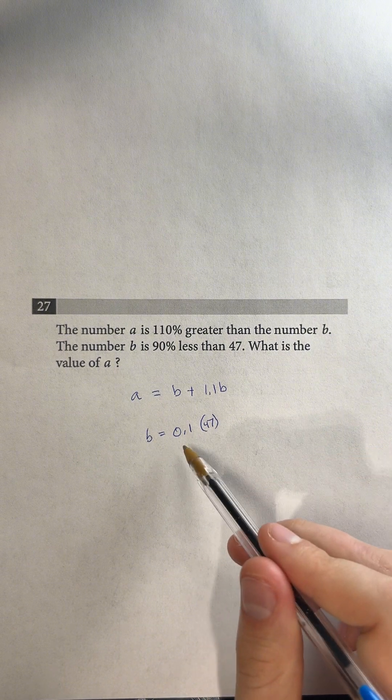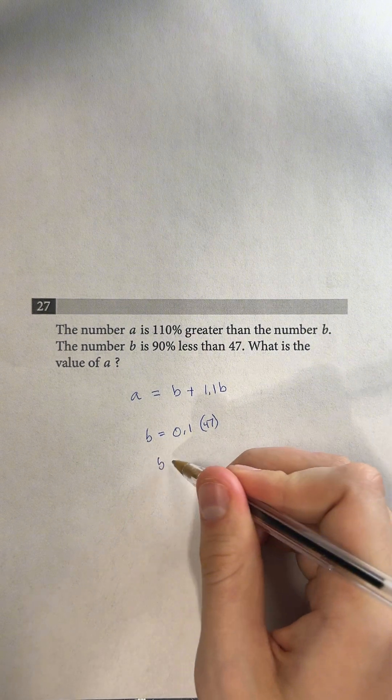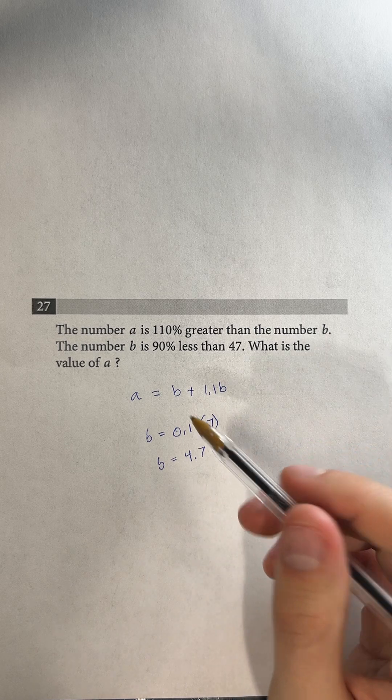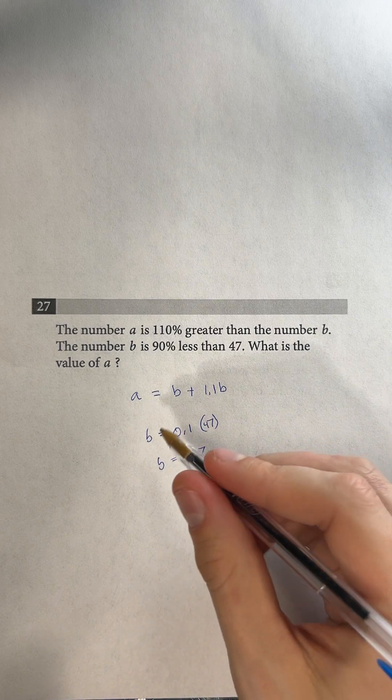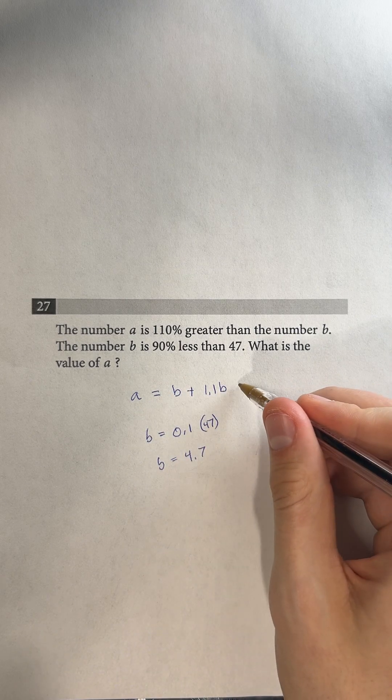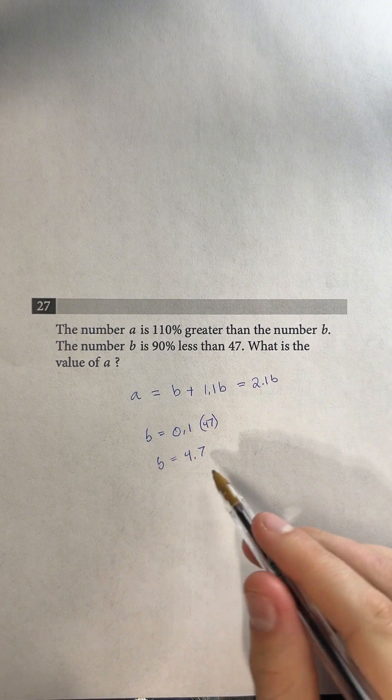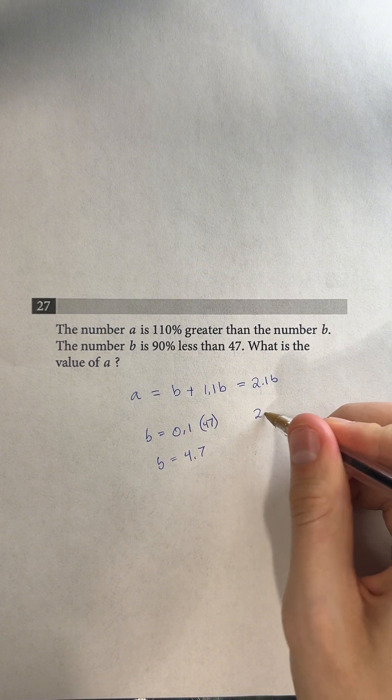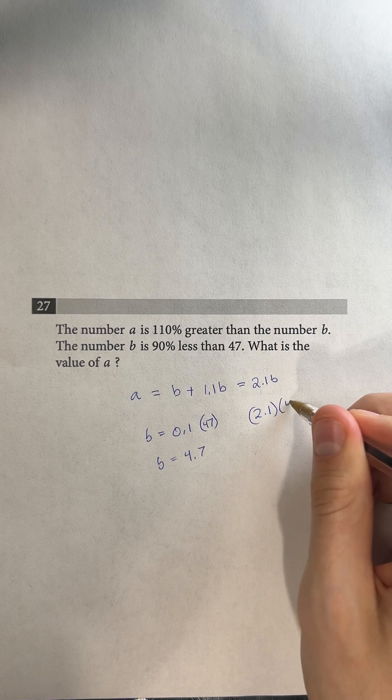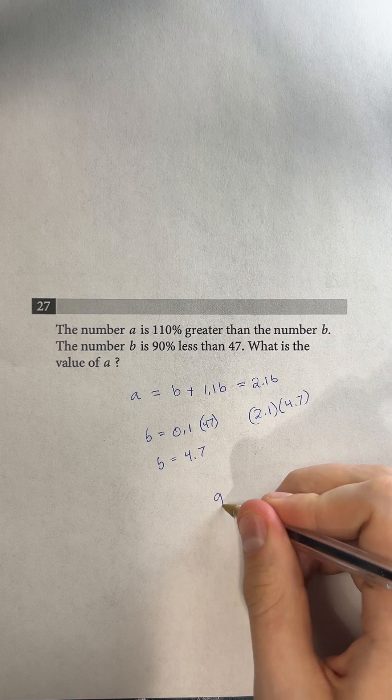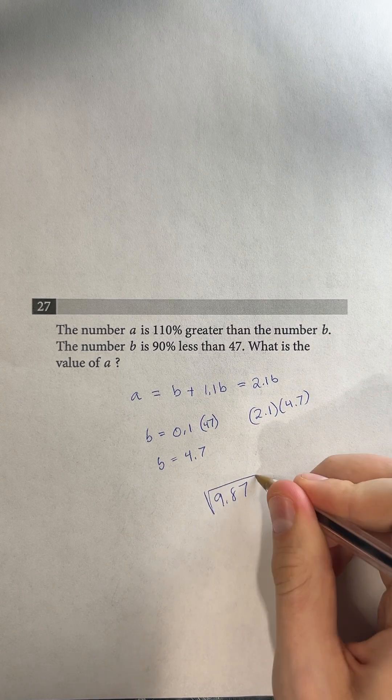So if B equals 0.1 times 47, then B is going to equal 4.7. And then we have an equation to get A from B. So if we simplify this, A equals essentially 2.1B. And so if B equals 4.7, A equals 2.1 times 4.7, which is going to give us 9.87 as our final answer.